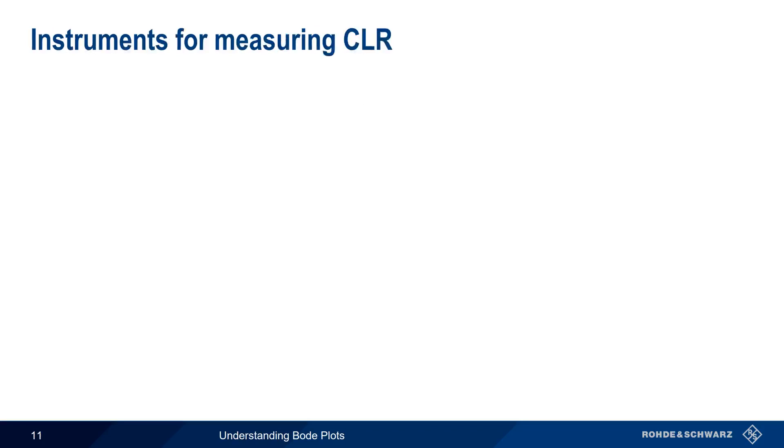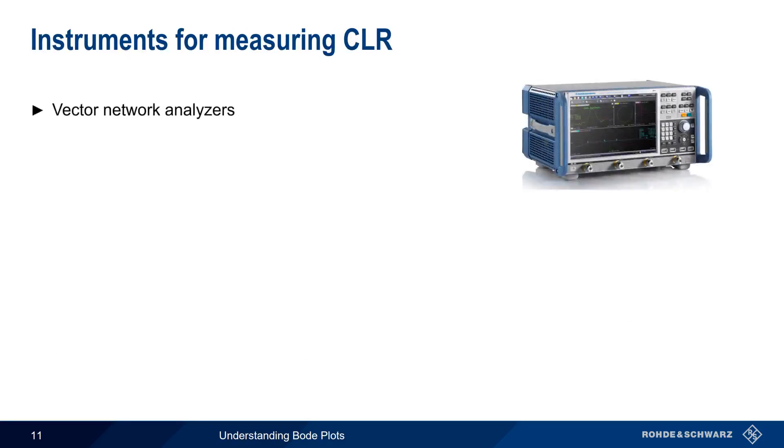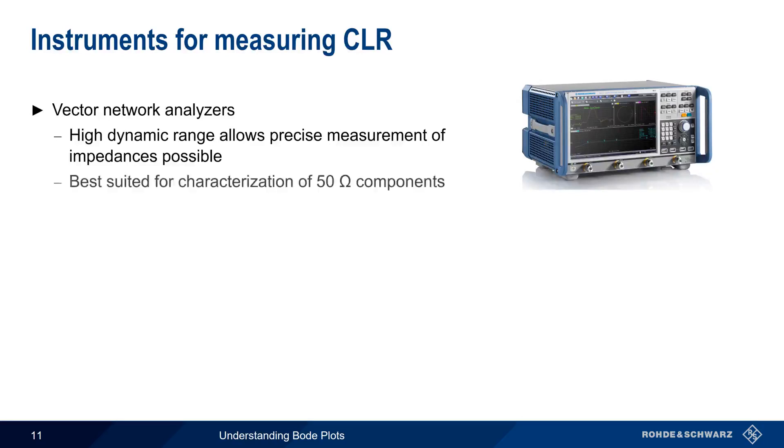Two different categories of instruments can be used when measuring closed loop response. The first of these is a vector network analyzer, or VNA. A VNA usually has a very high dynamic range, which allows it to make very precise measurements. However, one drawback to using a VNA is that VNAs are best suited for the characterization of 50 ohm components.